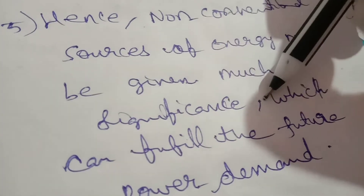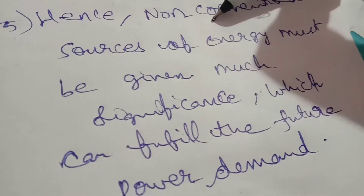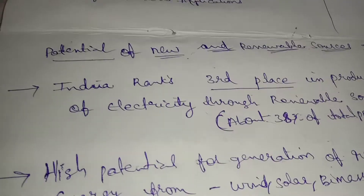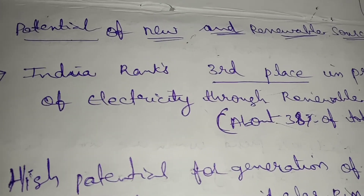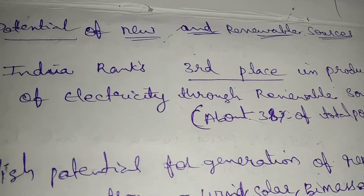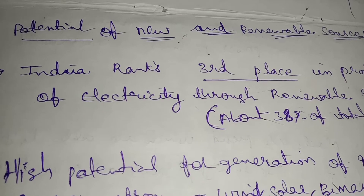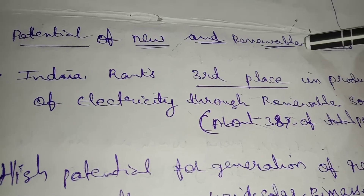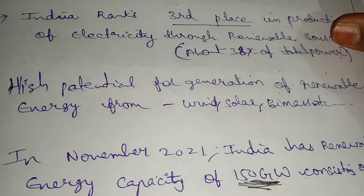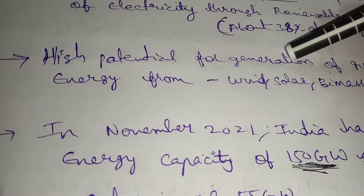Non-conventional sources are of significant importance for energy. We need the power to meet future demand — we will gain heat and electricity. That is why non-conventional sources are important. India ranks third place in the production of electricity through renewable sources, with about 38% of total power coming from renewable sources. There is high potential for the generation of renewable energy from wind, solar, biomass, and small hydro.